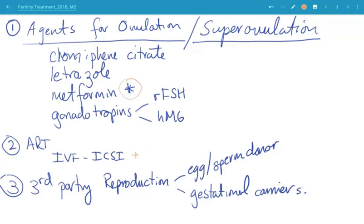The first part will talk about agents for ovulation and superovulation broken up into specific agents like clomiphene citrate, letrozole, metformin, and gonadotropins, specifically recombinant FSH and human menopausal gonadotropin. The asterisk next to metformin is to designate that metformin has historically been used or has been thought to be an agent for ovulation. We've learned that it is more of an adjunct and not a primary treatment, but its discussion is important nonetheless.